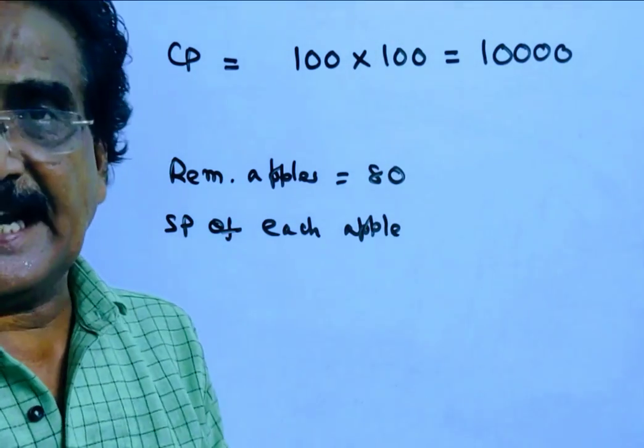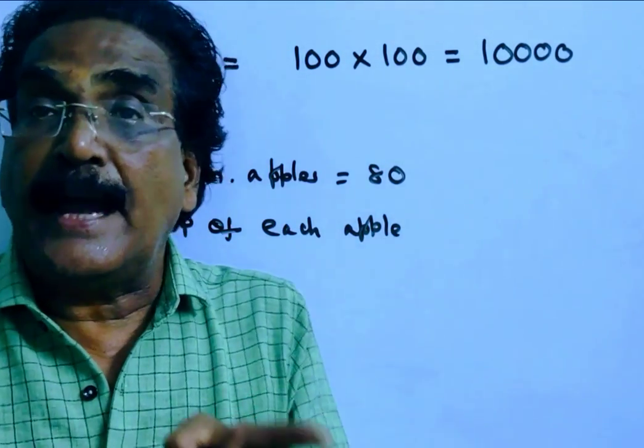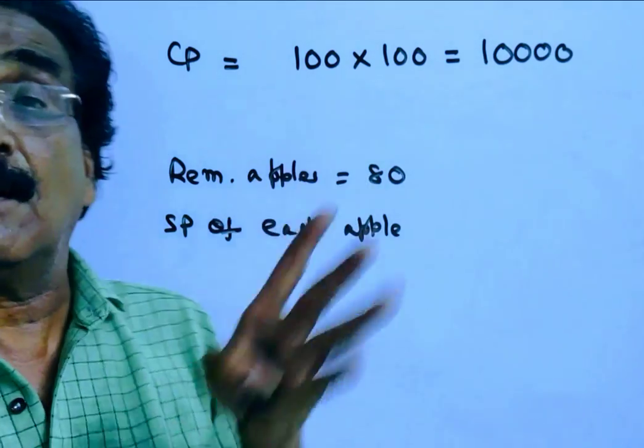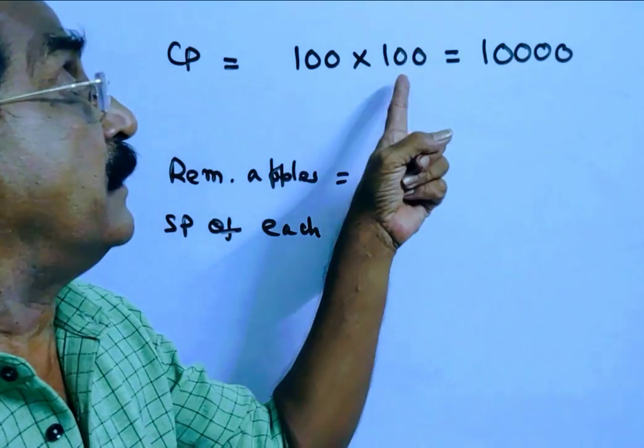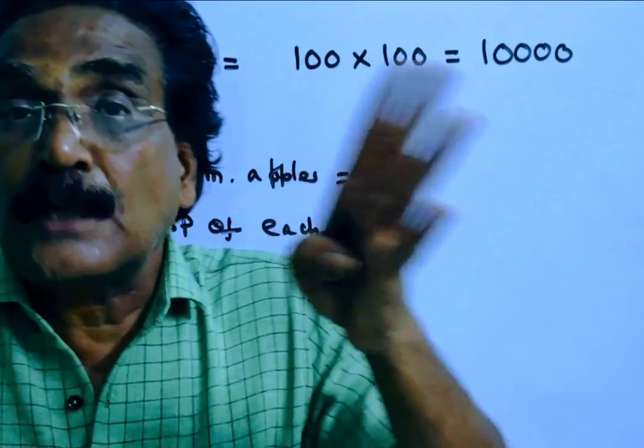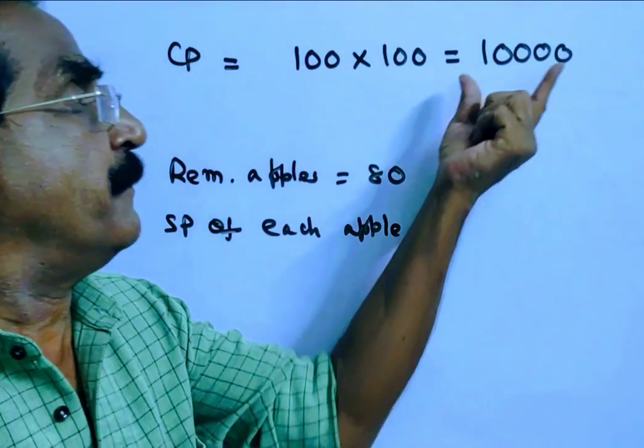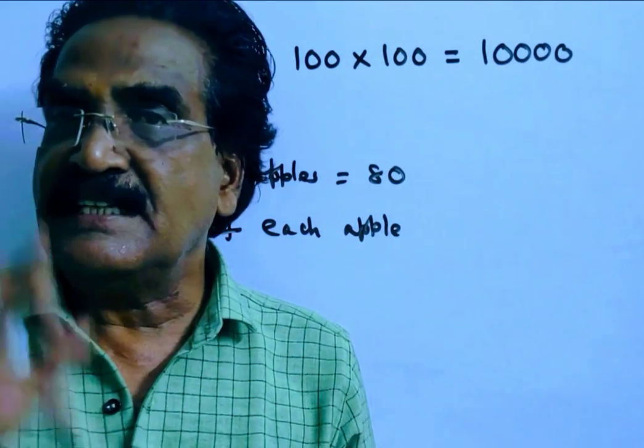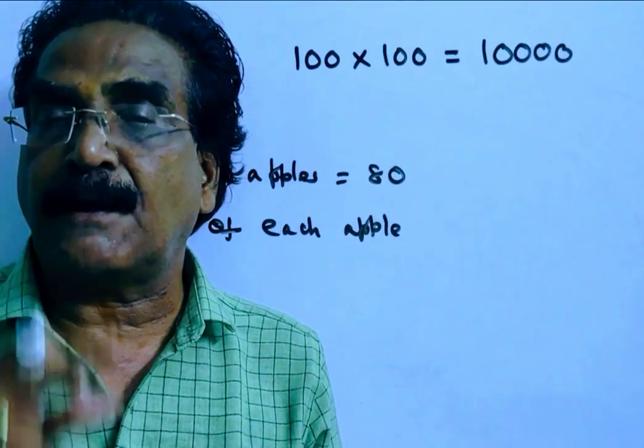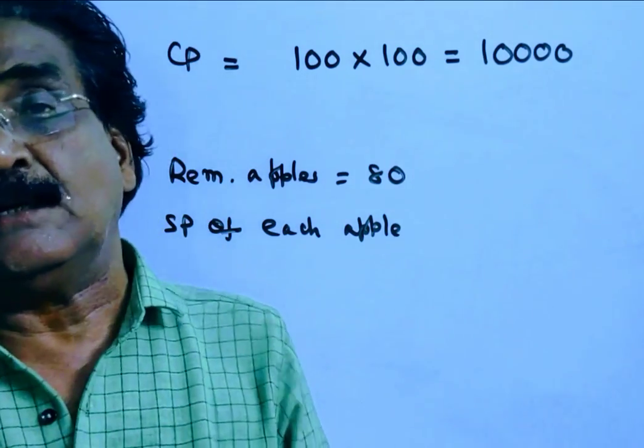The cart has 100 apples and the cost price of each apple is 100 rupees, so the total cost price of the cart is 10,000 rupees. It is given that he gets a profit of 92% on the whole cart.